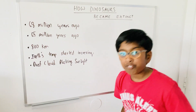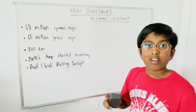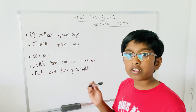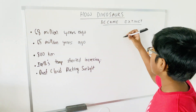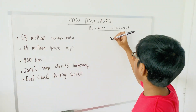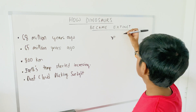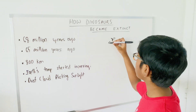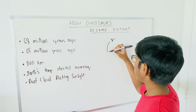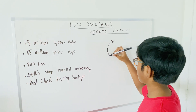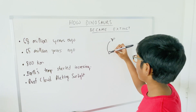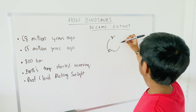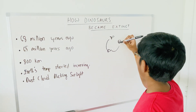Remember the food chain? Without the sun, the plants would die. Without the plants, the herbivores would die — pretend this is a herbivore. Without the herbivores, the carnivores would die. The sun is very important for the whole food chain.